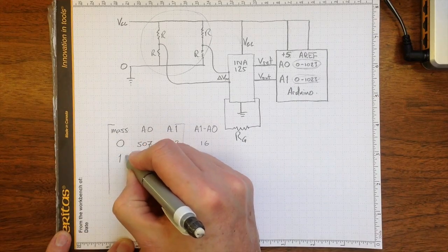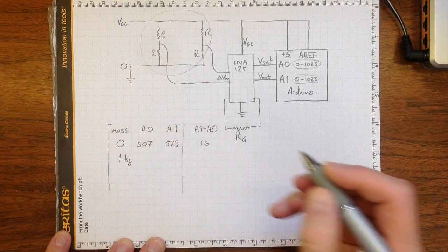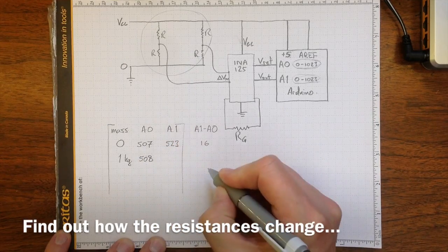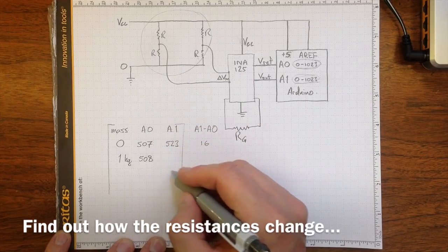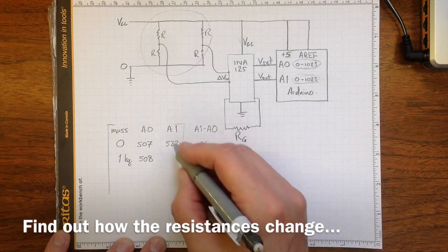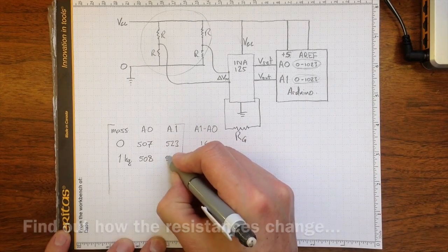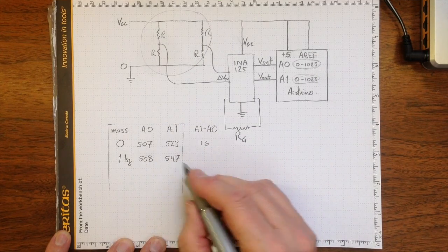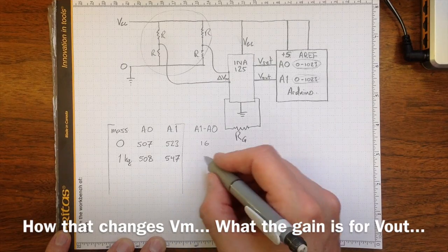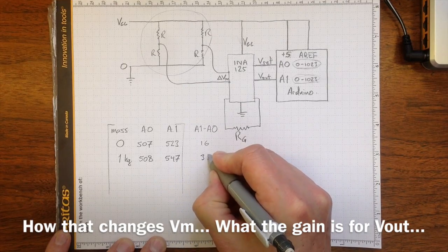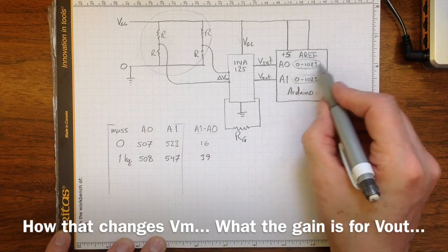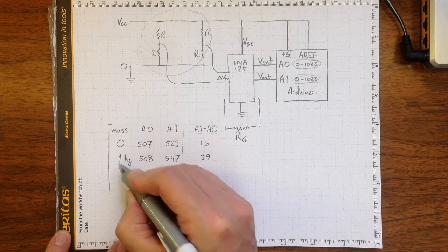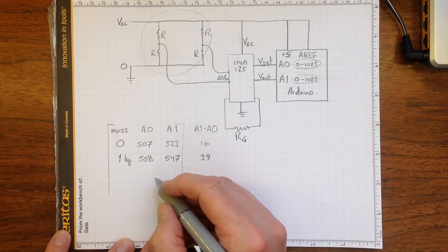If we go up to 1 kg, we might find that A0, when we measured this time, was 508. It's just normal variation. It should stay pretty much the same. But we might find that A1 was 547. 547 minus 508 leaves me with 39. So a difference in digital conversion values of 39 corresponds to a mass of 1 kg on the end of the cantilever beam.